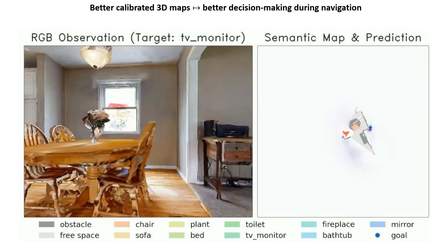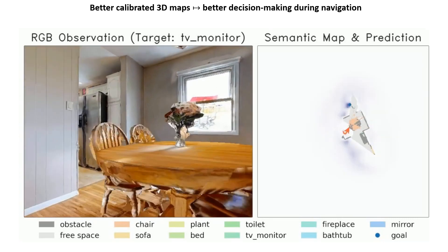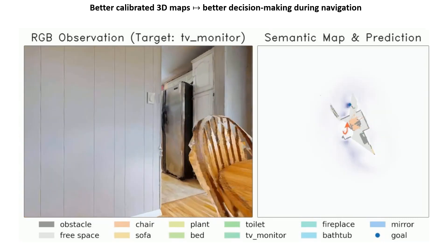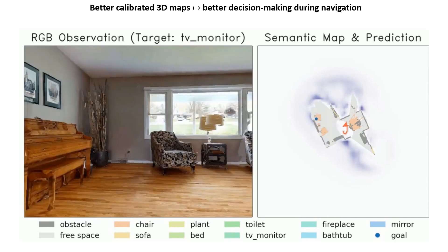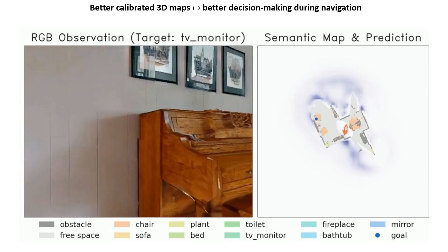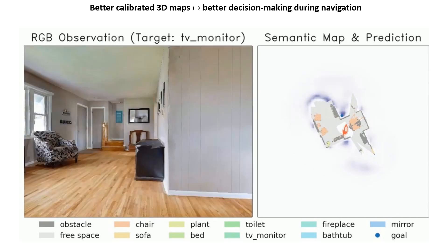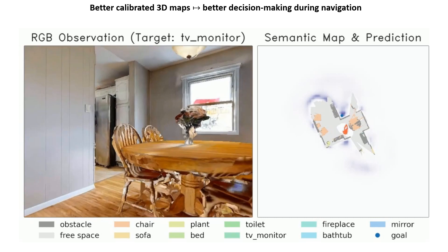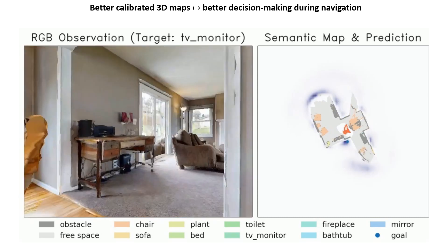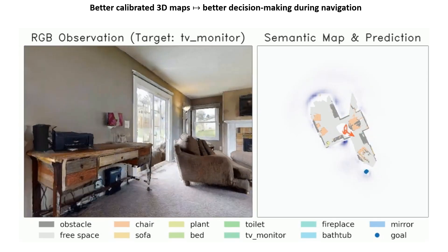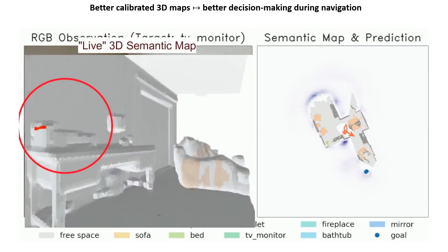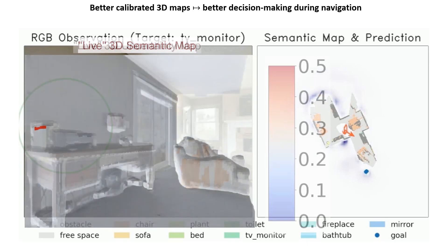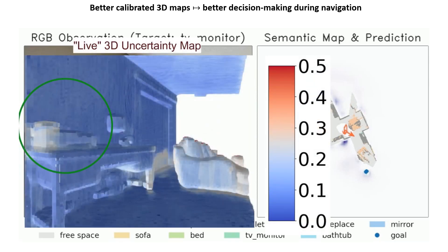We contrast that with the same agent using a properly fused semantic map. When passing through the same area as before, the 2D segmentation model still makes the same overconfident mistake. But due to proper fusion, it results in a low confidence 3D prediction, rejecting the detection and continuing the search until eventually reaching the correct goal. This increases the agent's robustness to semantic segmentation mistakes and improves its success rates in the long run.